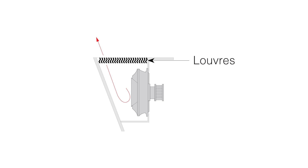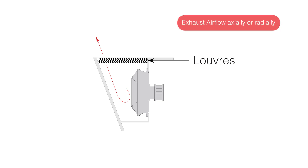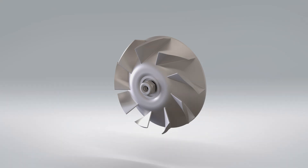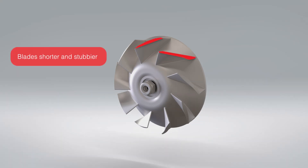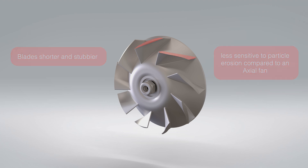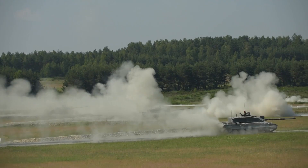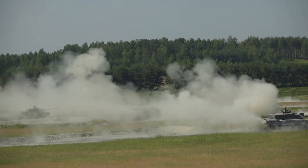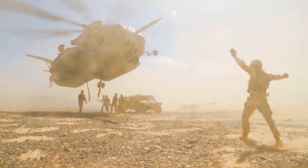Another benefit of a mixed-flow fan is its ability to exhaust airflow axially or radially, making it highly adaptable to tight spaces where axial flow is impossible. Finally, because the blades of a mixed-flow fan are short and stubby with a broad aerofoil section, they are much less sensitive to particle erosion compared to an axial fan, whose blades are long and thin. This makes them ideal for use in sand and dust-laden environments, such as sand scavenge applications.